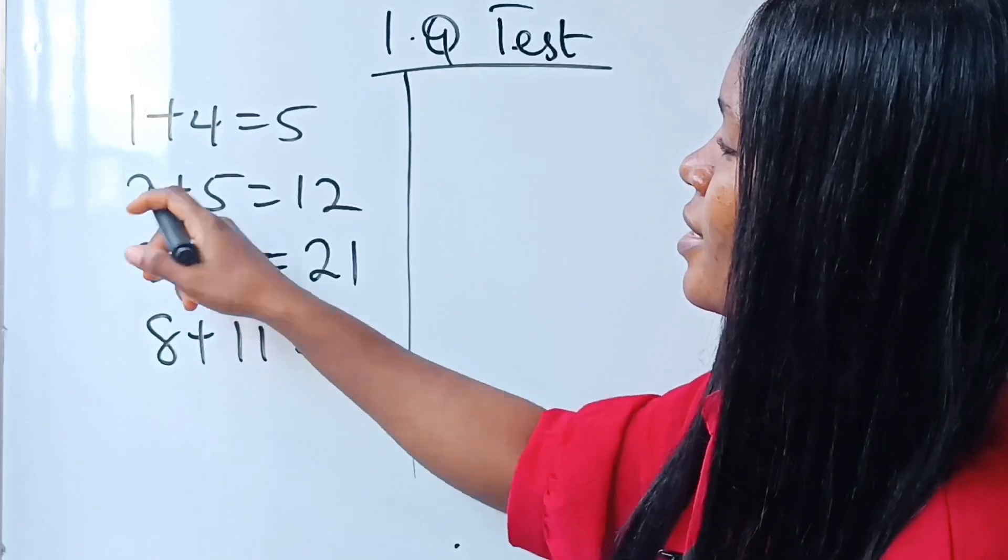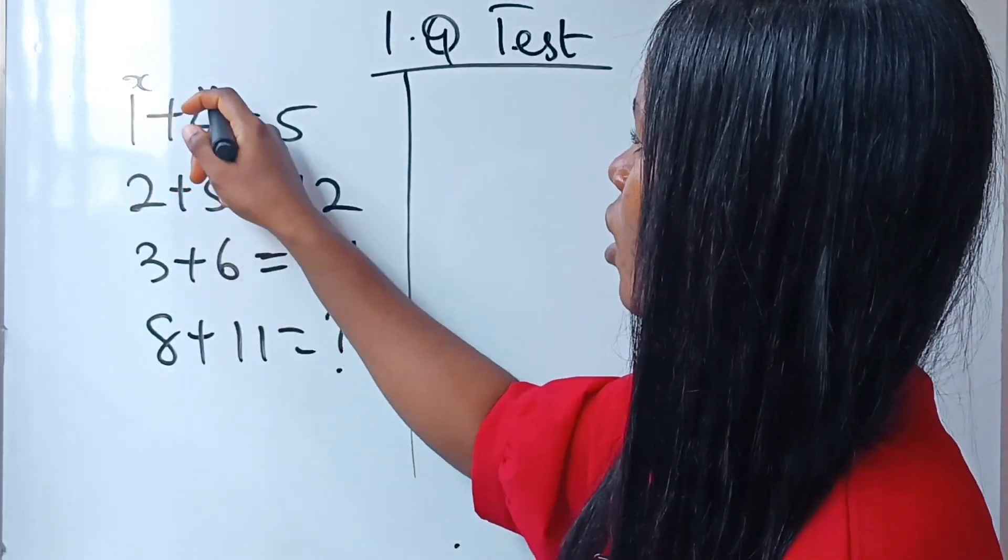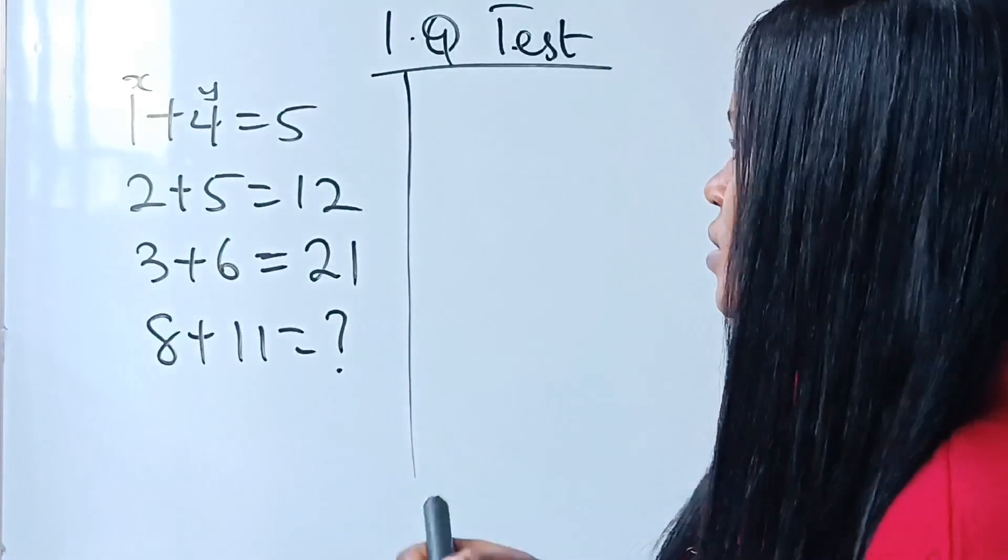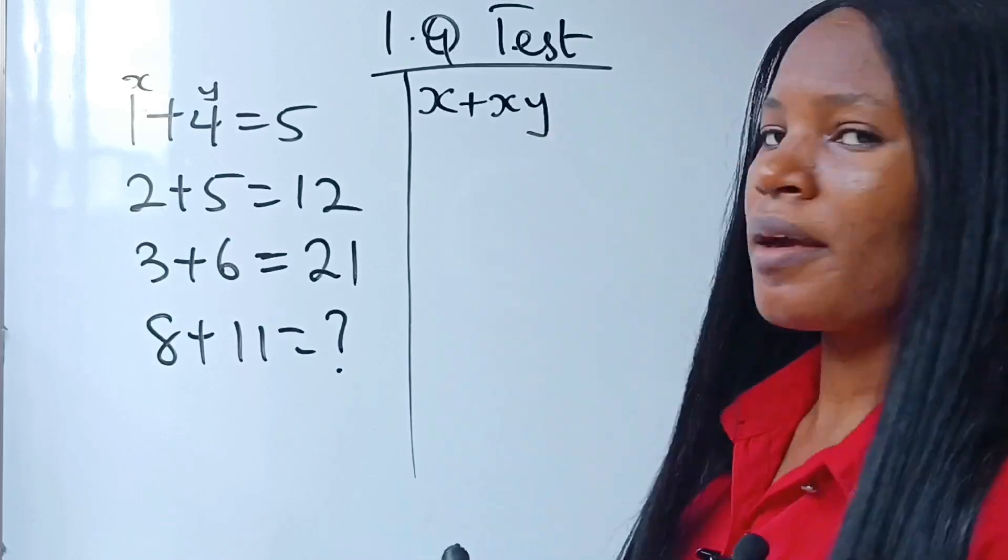Guys, what they did is, let's call the first number X and the second number Y. So this is the formula they used: X plus X times Y.